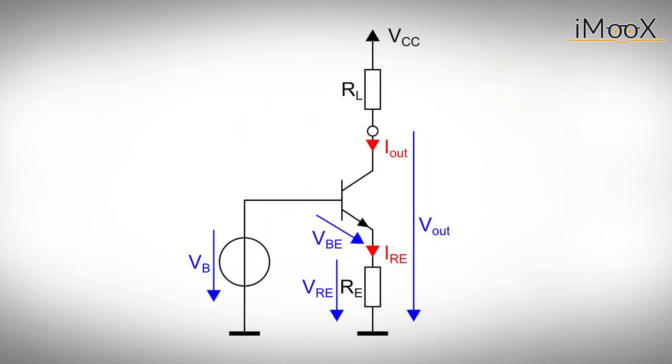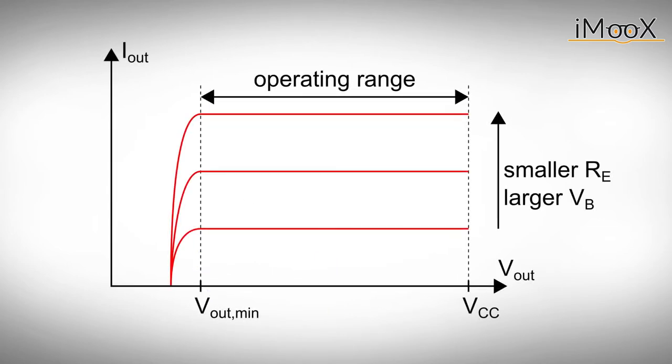But the circuit has its limits. The voltage at the output V out must not drop below a certain minimum voltage. Otherwise, the bipolar transistor no longer operates in the active regime but in saturation, and the output characteristic of our current source might look like this. In saturation, the bipolar transistor shows strong variations of collector current with respect to its collector emitter voltage.